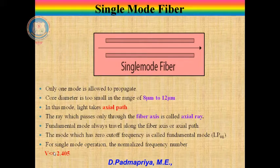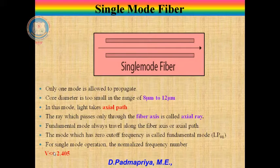You may ask what is the normalized frequency number V. The normalized frequency parameter of the fiber, also called the V number, is a useful specification. Many fiber parameters can be expressed in terms of V, such as the number of modes, which is most commonly used.